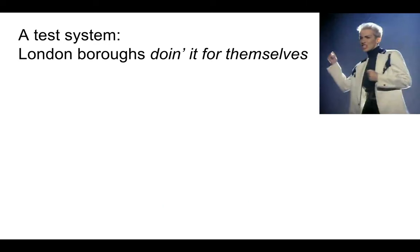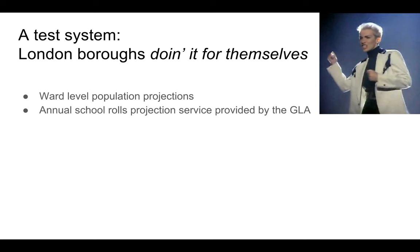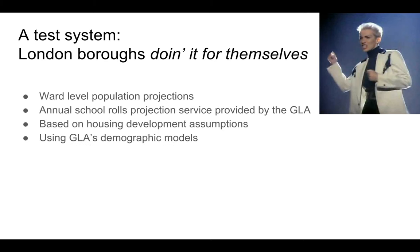Given this collaboration, you may have guessed that the city in question is London. Currently, London boroughs are running their own ward population projections, as part of the school roles projection service provided by the GLA. The projections are based on housing development assumptions. They use the GLA's demographic models and they run on Mastodon C's platform, Witan.